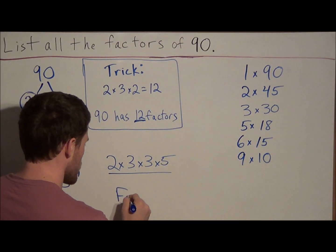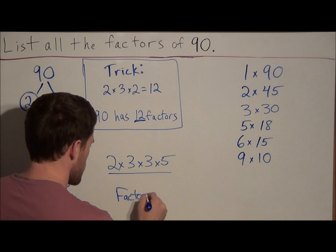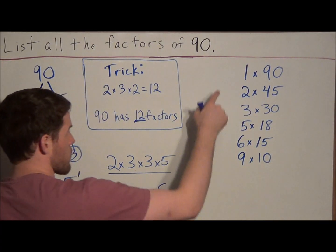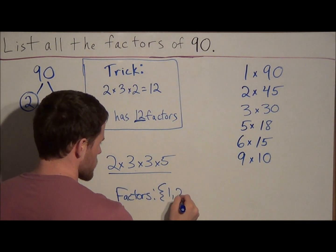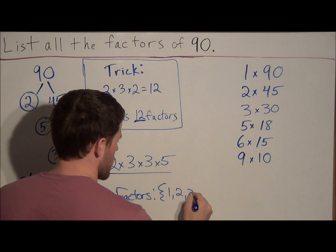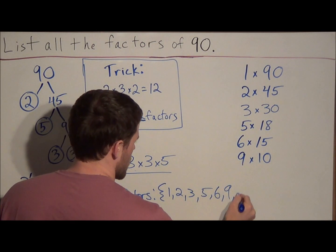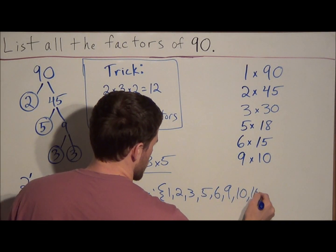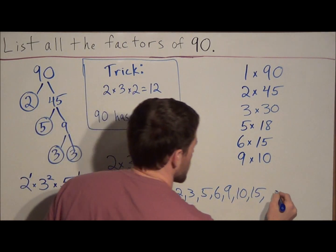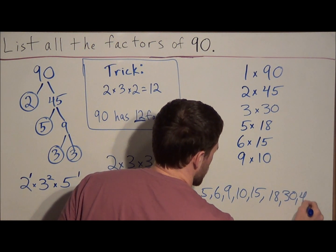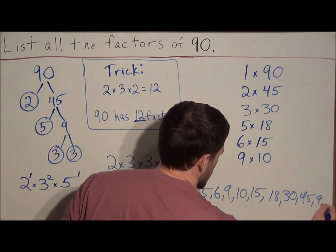So the factors, and we'll list them out in our final solution, are, and we'll do it from least to greatest. We have 1, 2, 3, 5, 6, 9, 10, 15, 18, 30, 45, and 90.